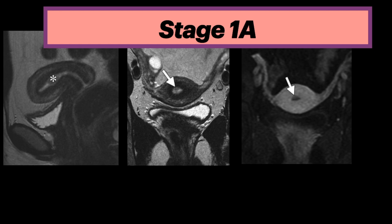This is an example of stage 1a endometrial cancer. Sagittal T2-weighted MRI shows distension of the endometrial cavity by an intermediate signal intensity tumor. The axial oblique T2-weighted MRI shows the intermediate signal intensity tumor within the hyperintense endometrial cavity, with the junctional zone still well delineated and no evidence of invasion.